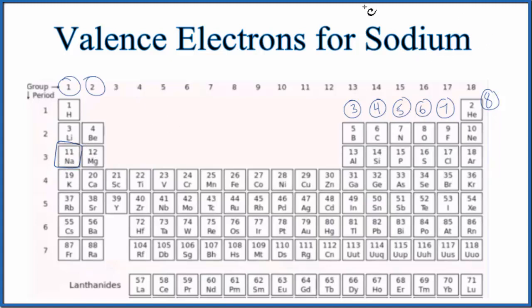We could also write the electron configuration for sodium, and that would also help us. So for sodium, it has atomic number 11. That means it has 11 protons. And since all these elements on the periodic table are neutral, it has 11 electrons. So let's write the configuration.